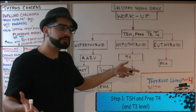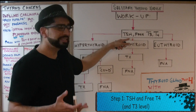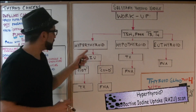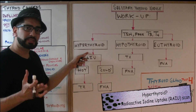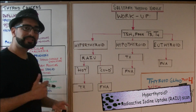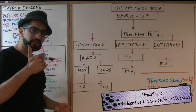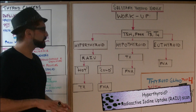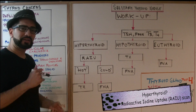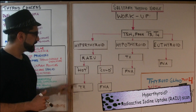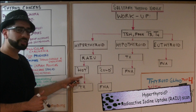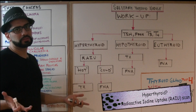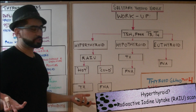First things first, you get a TSH level and a free T3 and a free T4. If the patient ends up being hyperthyroid, that means T3 and T4 are quite elevated and TSH is suppressed. You do a radioactive iodine uptake scan. You're either going to get a hot nodule, which is hyperfunctioning, or a cold nodule, which means it's not hyperfunctioning.